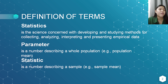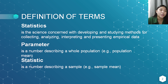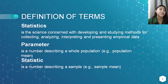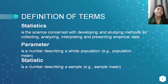Next we have parameter. It is a number describing a whole population, or it is data collected from the entire population. For example, all registered voter students in the year 2022 at Negros Oriental State University.